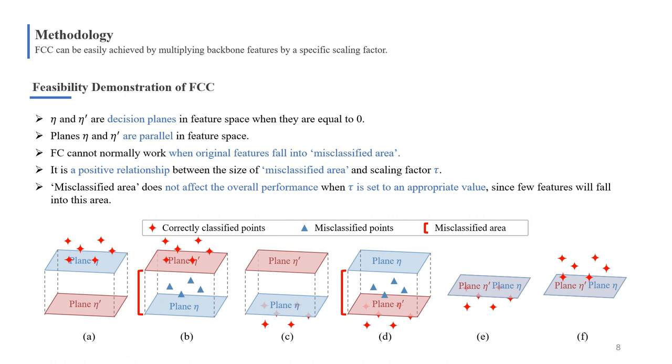There is a positive relationship between the size of misclassified area and the factor τ. In fact, we find the area does not affect overall performance when τ is set to a proper value.